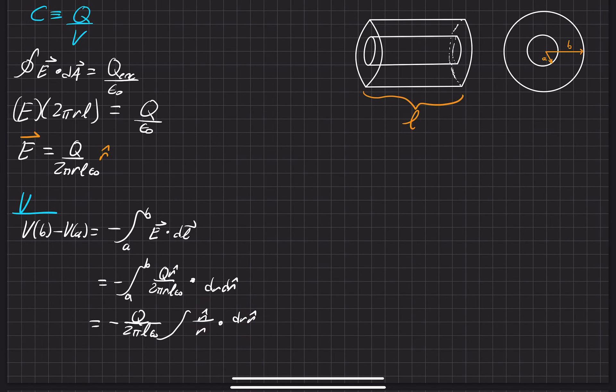Since the r-hats are in the same directions, that just turns into the integral of 1 over r dr. Oh, I forgot the limits of integration.